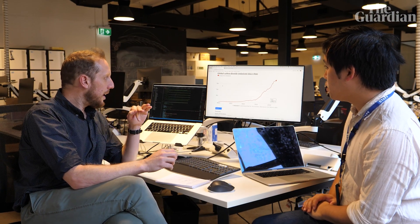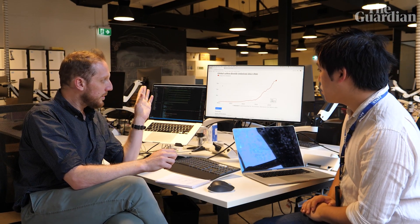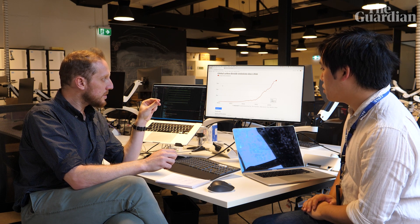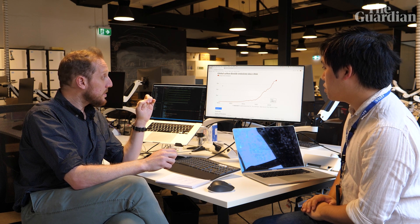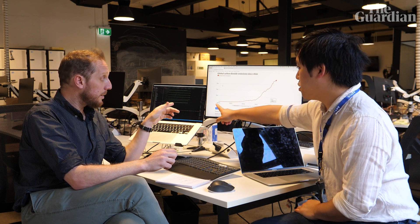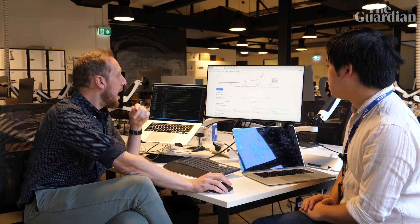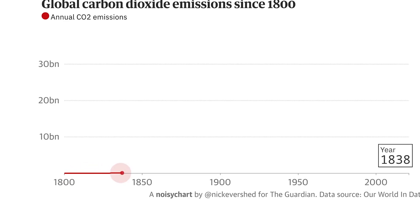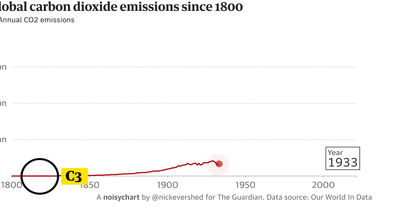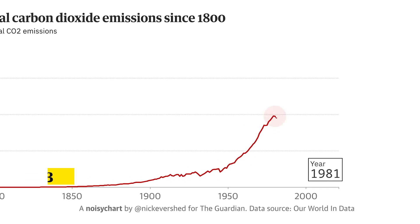What's happening is it's taking each year's worth of CO2 emissions, which ranges from 28 million tonnes to 37 billion tonnes on the right. And then it maps that data against a pitch, which in this case is going from C3 through to C5.